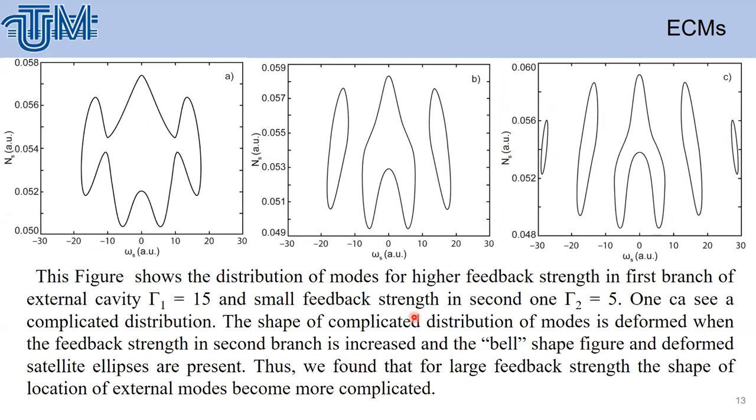When we increase the feedback strength in the first branch to 15 and change in the second branch, then we have some strange figure here. It shows an idea that already for the stationary solution, the feedback strength influences the location of modes. When we increase more the feedback strength, then we got the same as in the previous case, some similar figures.